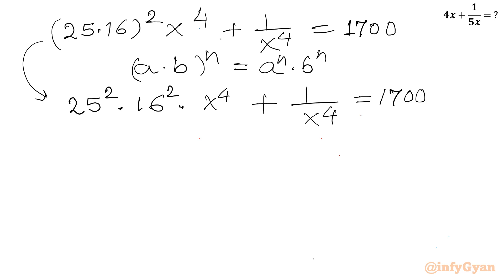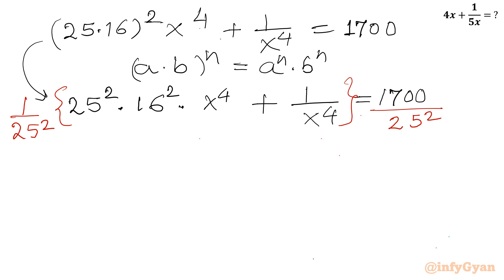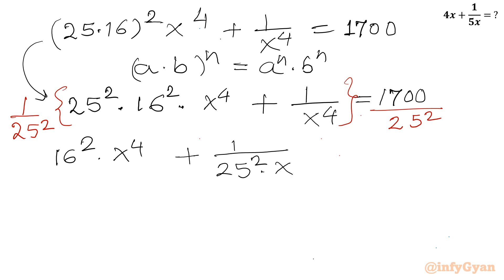Now I will divide this equation by 25² on both sides. The 25² will cancel on the left, giving us 16² times x⁴ plus 1 over 25² times x⁴. The right hand side becomes 68 over 25 after dividing numerator and denominator by 25.